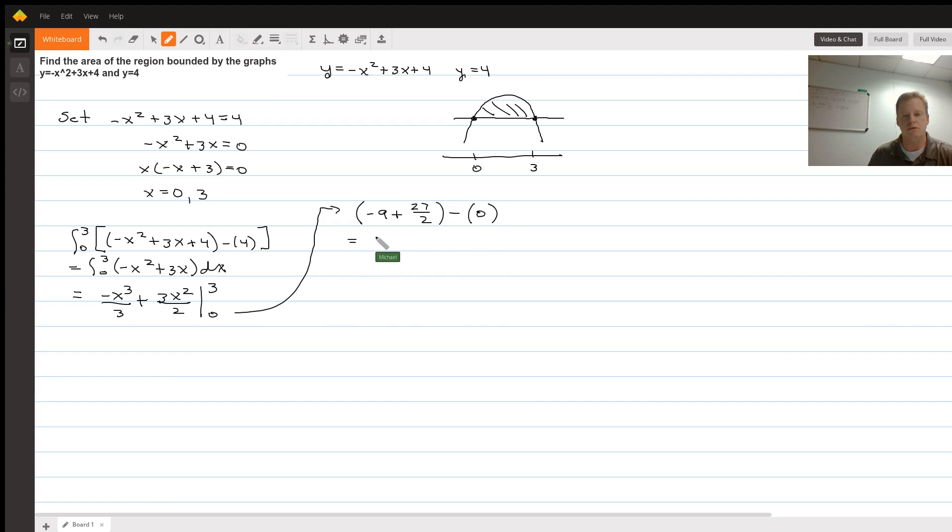Using a common denominator, negative 18 over 2 plus 27 over 2, which is going to be equal to 9 halves. Usually you just leave it as an improper fraction or you could say 4.5. That is the amount of area between the curves. Thank you for the question.